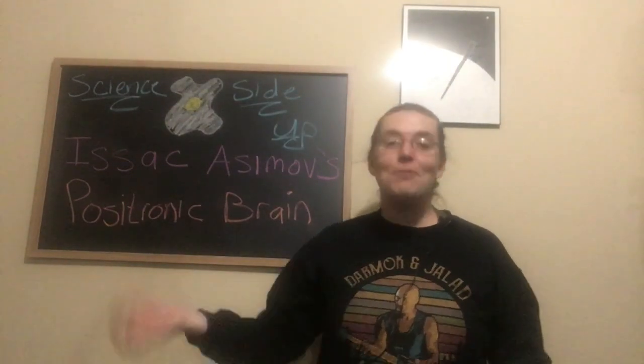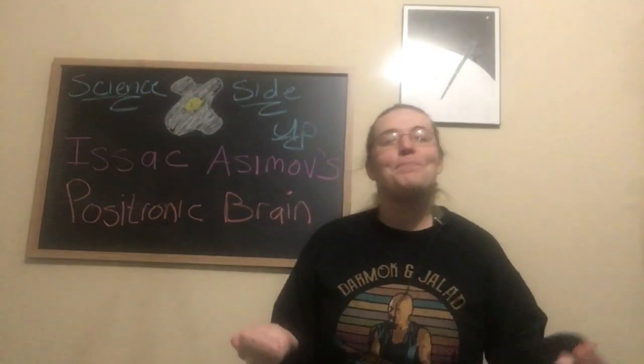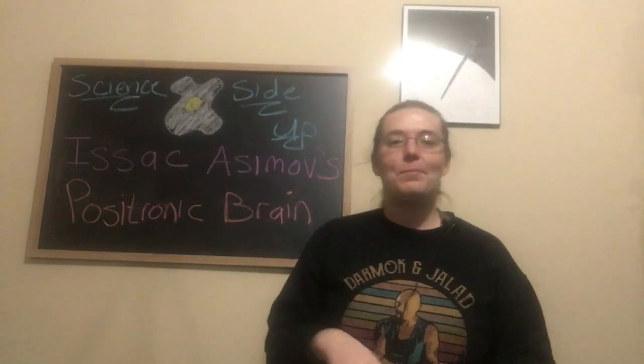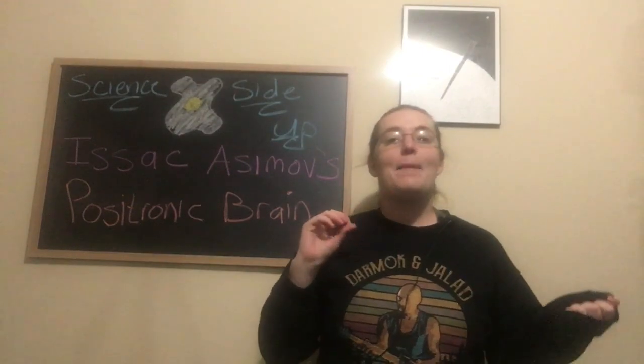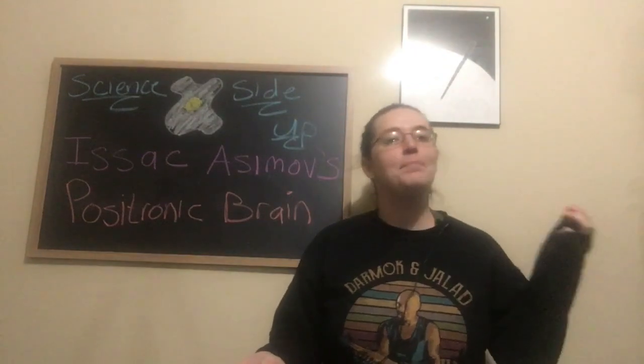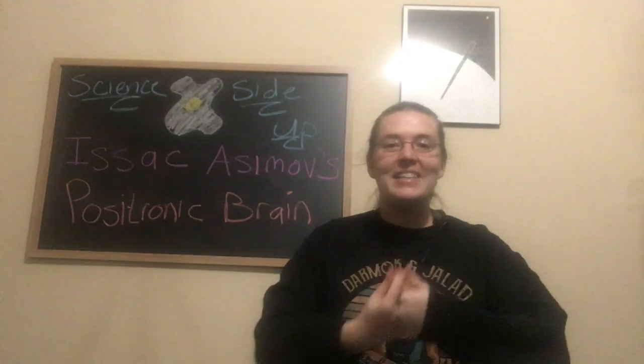And so now that we know what those particles are, like an alpha particle is the nucleus of a helium atom, we still use the old names. So a beta minus particle is an electron and a beta plus particle is a positron.